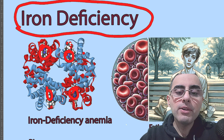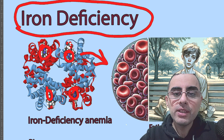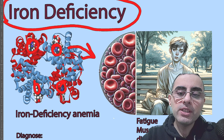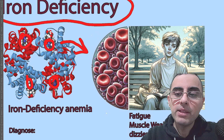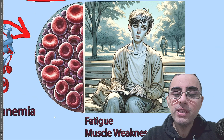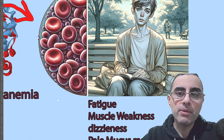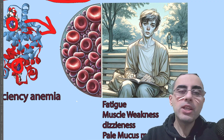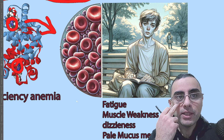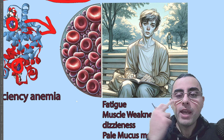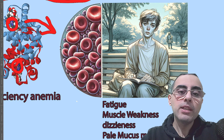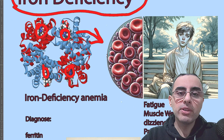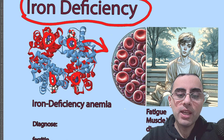When we have iron deficiency, we have iron deficiency anemia. The manifestations of anemia are usually fatigue, muscle weakness, dizziness, and pale mucous membranes. You can easily check a person's mucous membranes — especially the inner layer of the eyelid — which should normally be pink. If it's pale, it can indicate anemia, and the most common form is iron deficiency anemia.